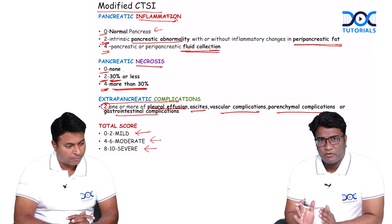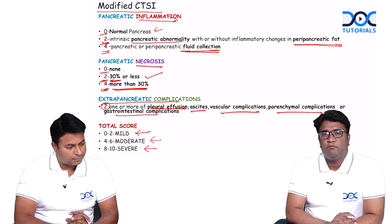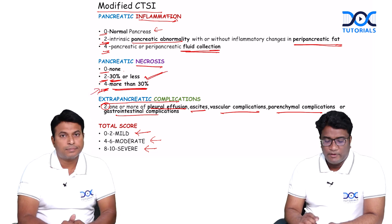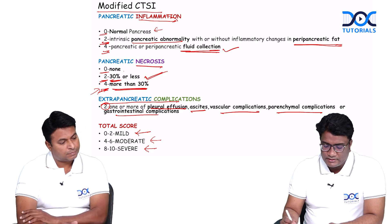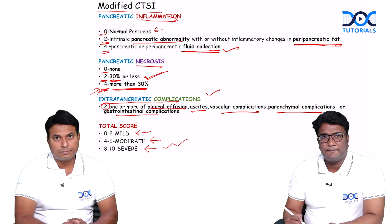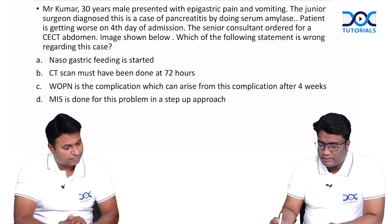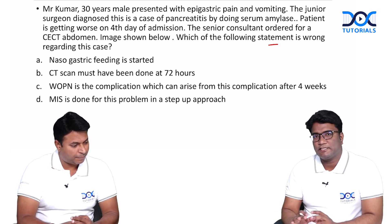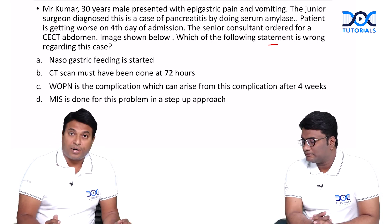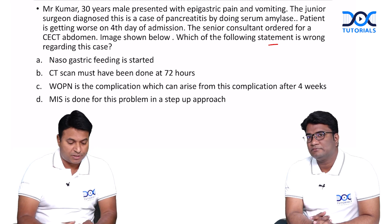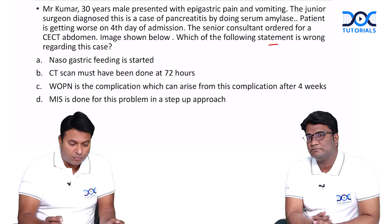In our case, we had acute necrotizing pancreatitis involving more than 30%, so we could go for almost a score of four for necrosis alone. We also had pancreatic inflammation, peripancreatic fluid collections, and extra-pancreatic complications. So we were dealing with a severe type of pancreatitis, which has a mortality of around 30%. I should be very serious dealing with this case.